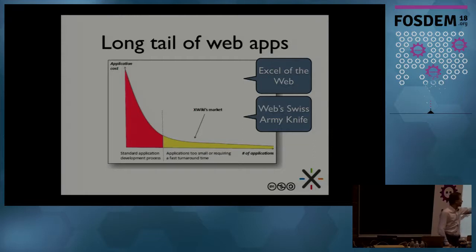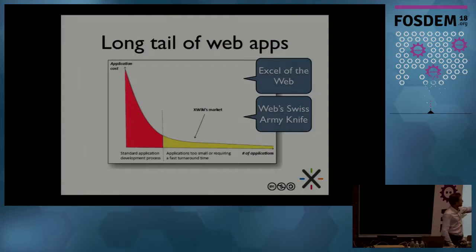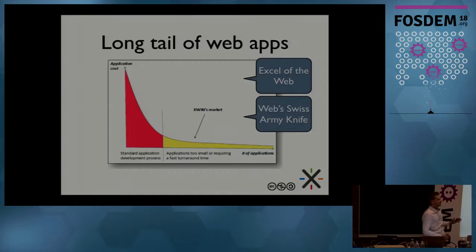And what Amazon did, for example, is that they were able to put a lot of books online, but sell only a few number of those — as low as one book. But if you compute the surface of the yellow part versus the red part, the yellow part is actually quite large and can be larger than the red one.